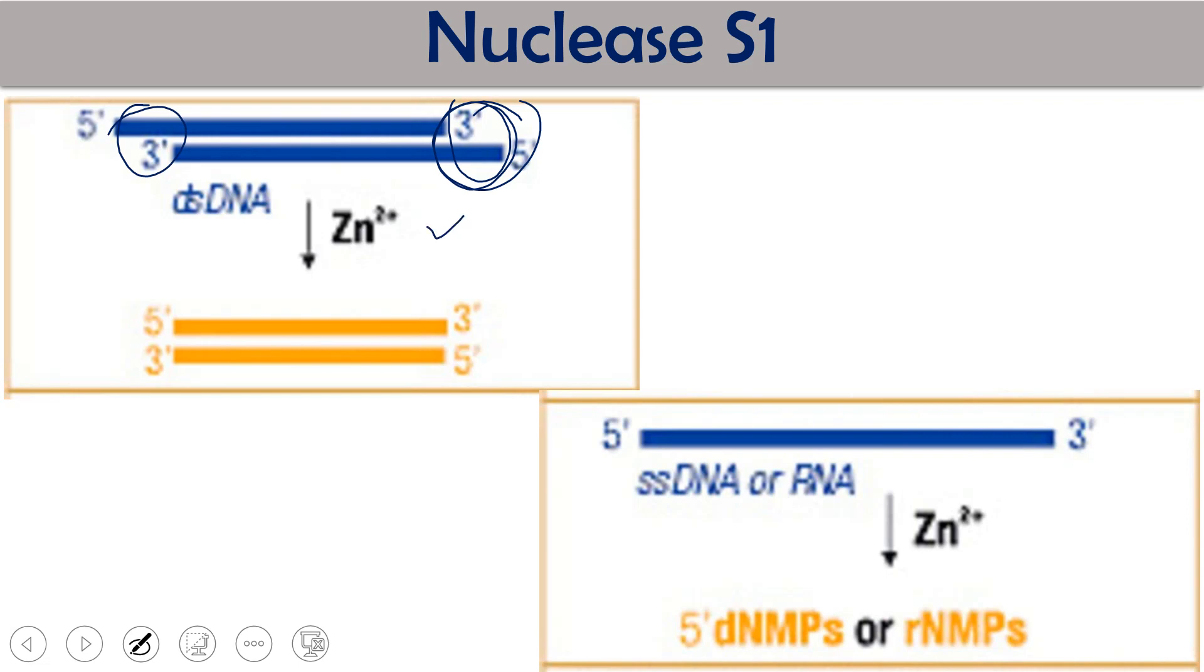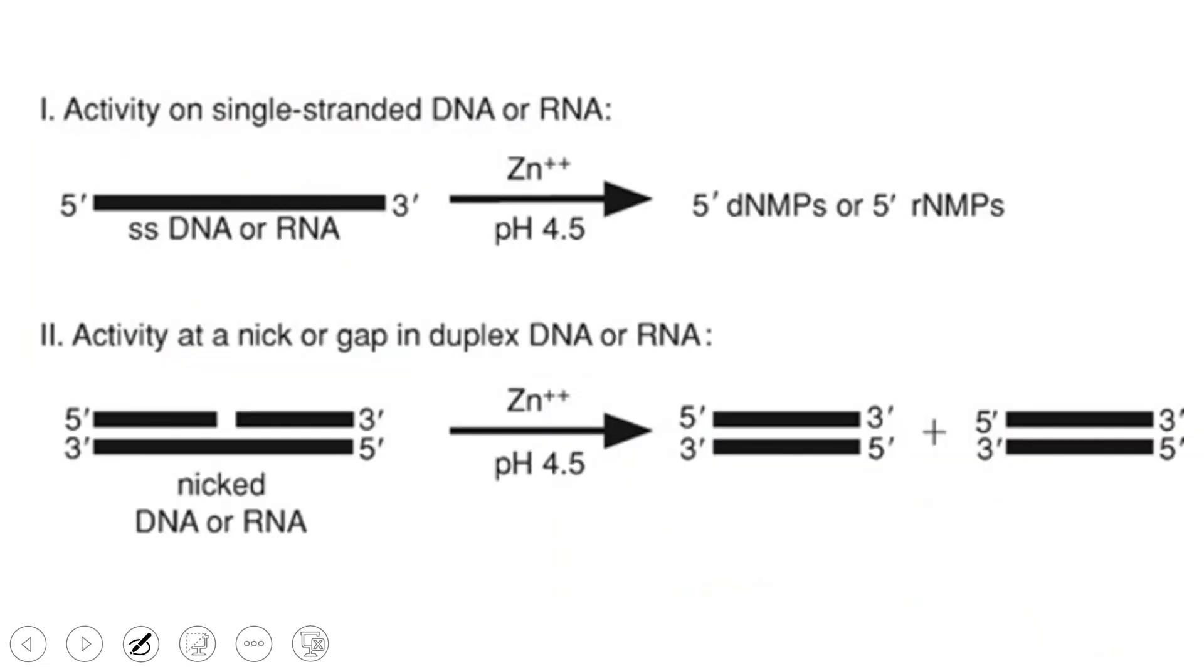This Nuclease S1 requires zinc for their activity. Three zinc ions are required by this nuclease enzyme. Same enzyme Nuclease S1 works on single-stranded DNA as well as RNA in the presence of zinc and degrades these nucleotides. It removes 5 prime dNMPs or rNMPs. If it is RNA it will be ribonucleotides, if it is DNA then it will be deoxyribonucleotides.